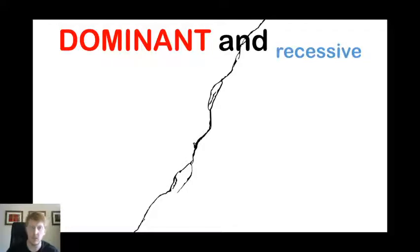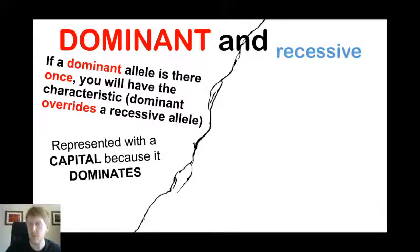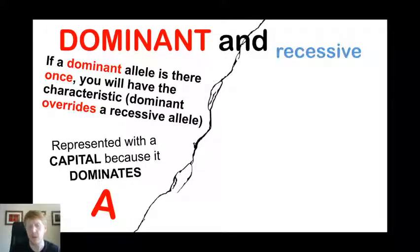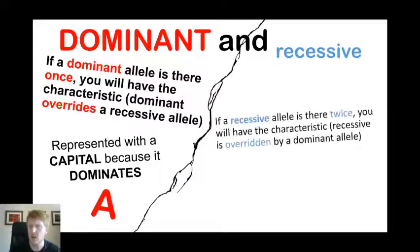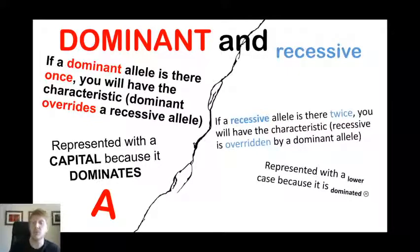Let's look at dominant and recessive and try and put that in context of alleles. So if a dominant allele is there once, you will always have that characteristic. The dominant allele overrides the recessive one. It is represented with a capital letter because it dominates, such as capital A — but that letter can be anything; they'll give it to you in the question. Capital letters denote a dominant allele. Now if a recessive allele is there twice, you will have the characteristic. But recessive alleles get overridden by dominant alleles — they get hidden or masked by the dominant one. They're represented with a lowercase letter because it is dominated, such as a lowercase a.